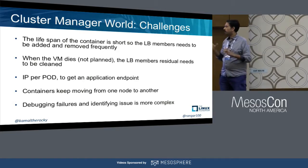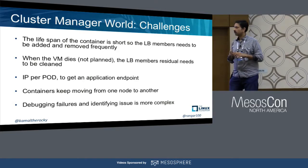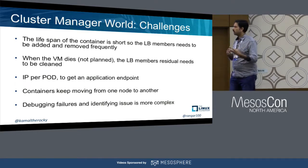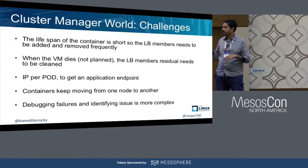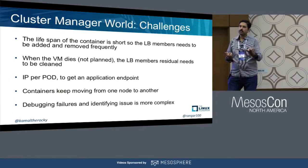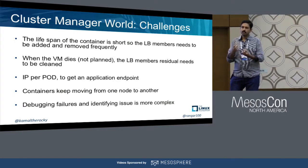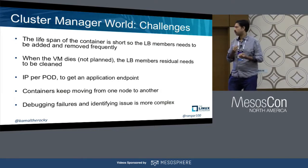The IP-per-pod challenge means that every time a pod dies and comes back it gets a new IP, so the load balancer configuration has to be updated. Containers keep moving, especially with a cluster manager — they can move at any point of time — so the system doing these updates should also be aware of all those scenarios.